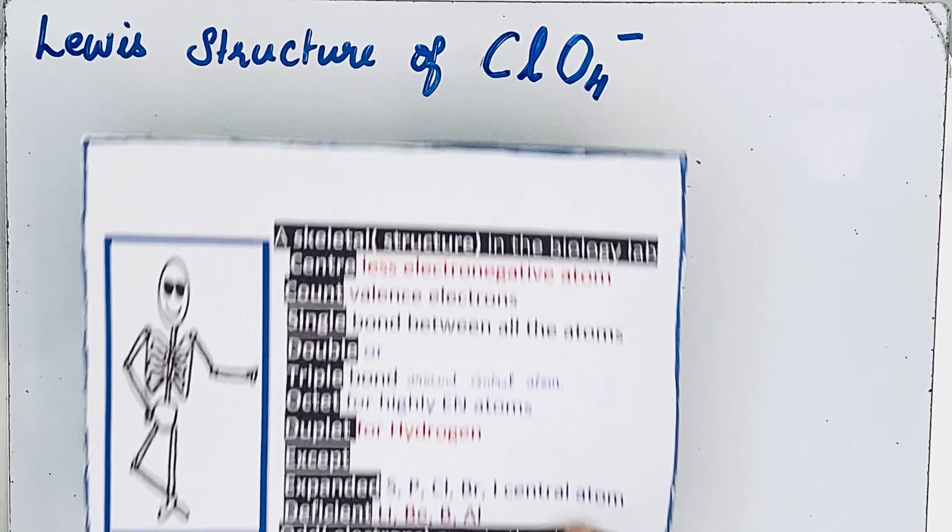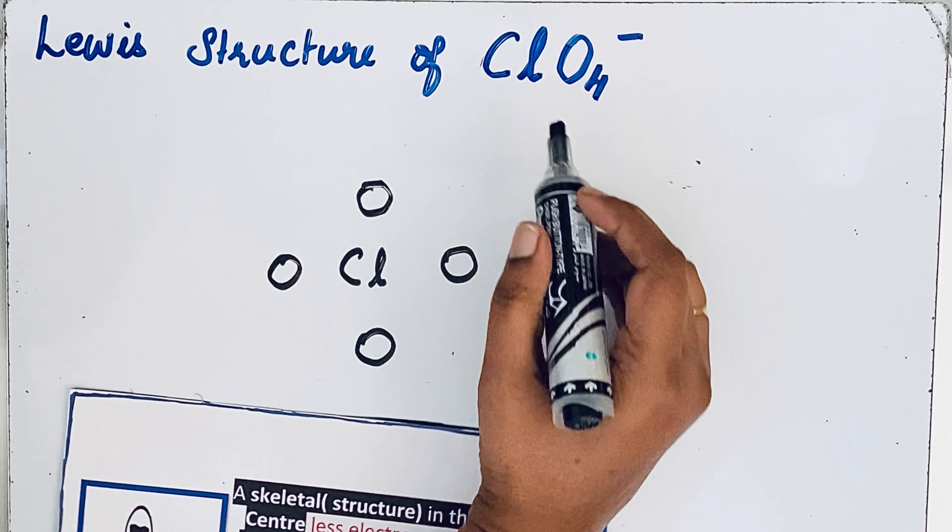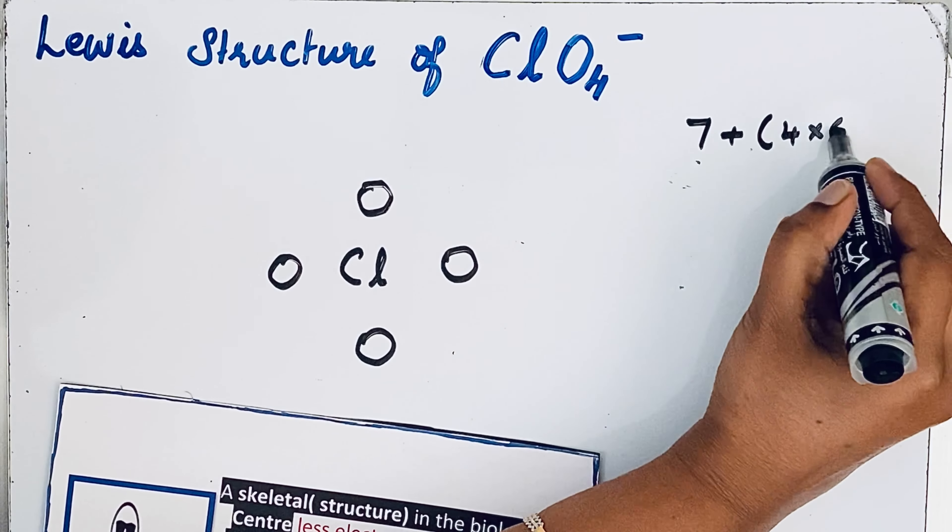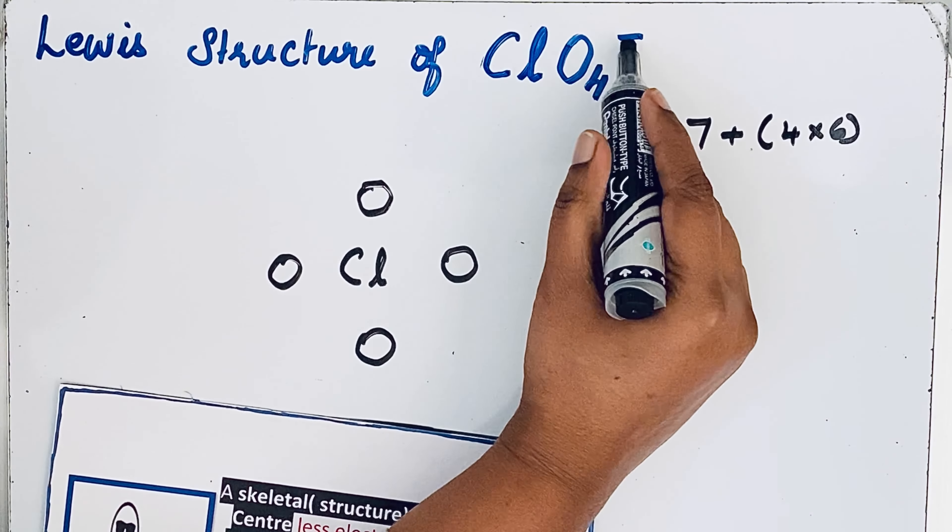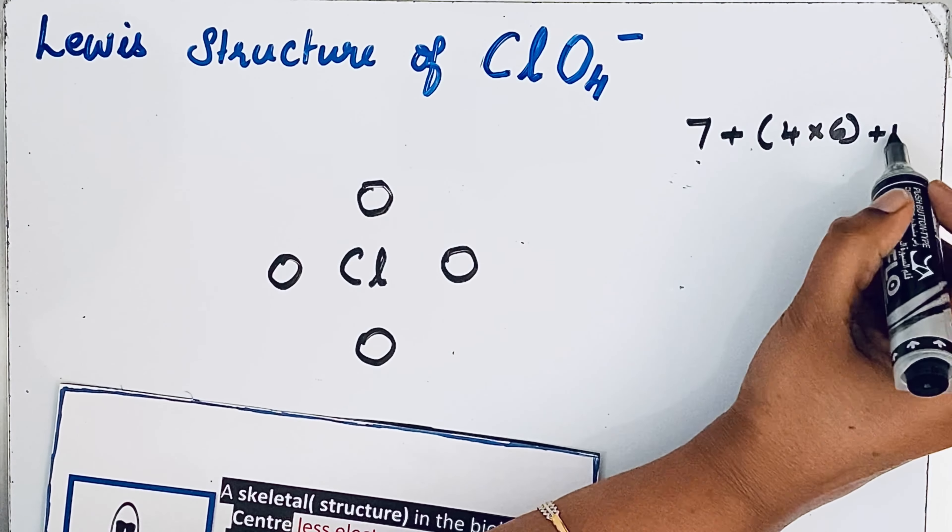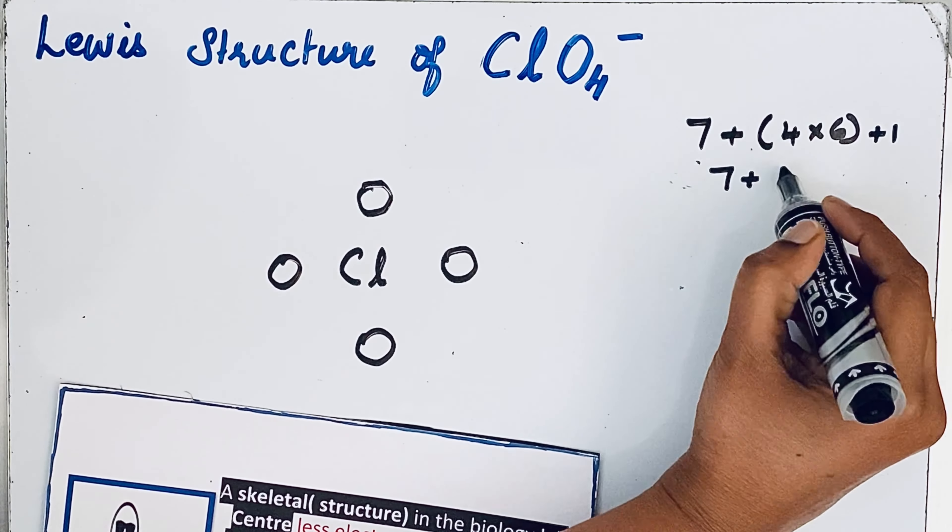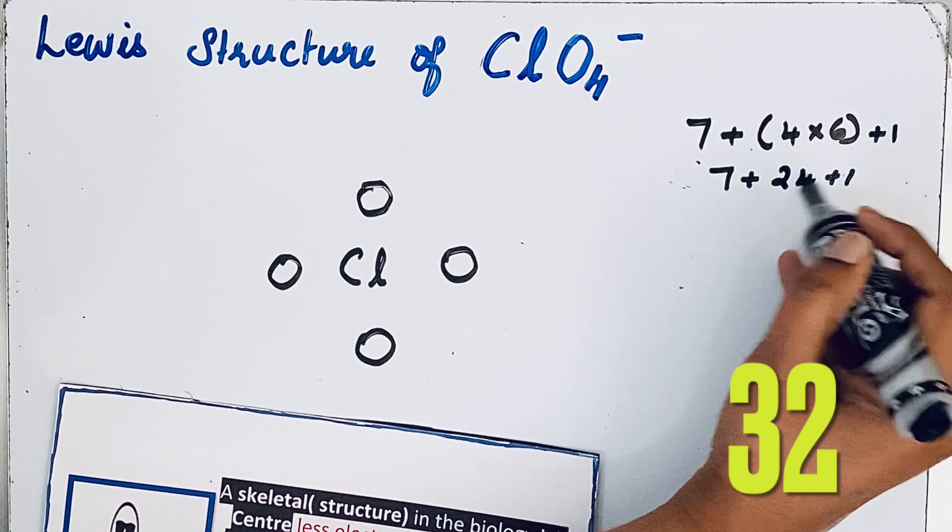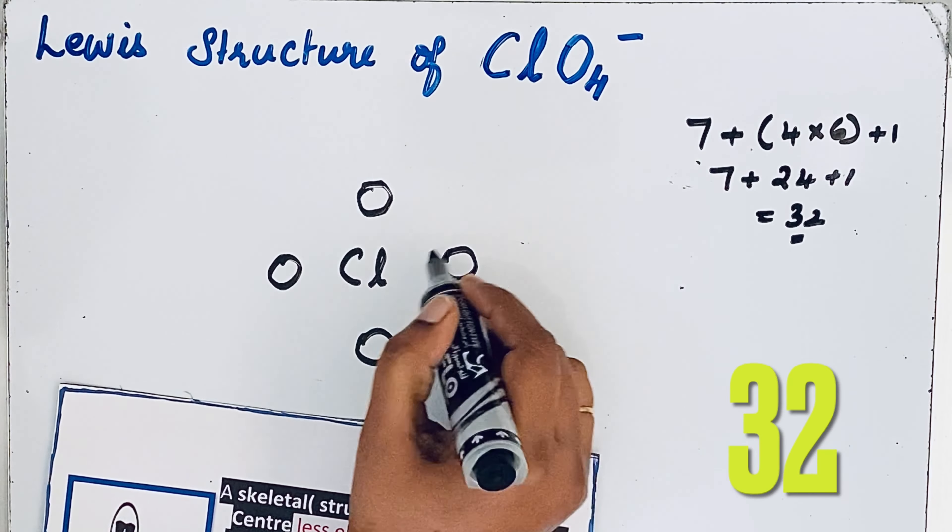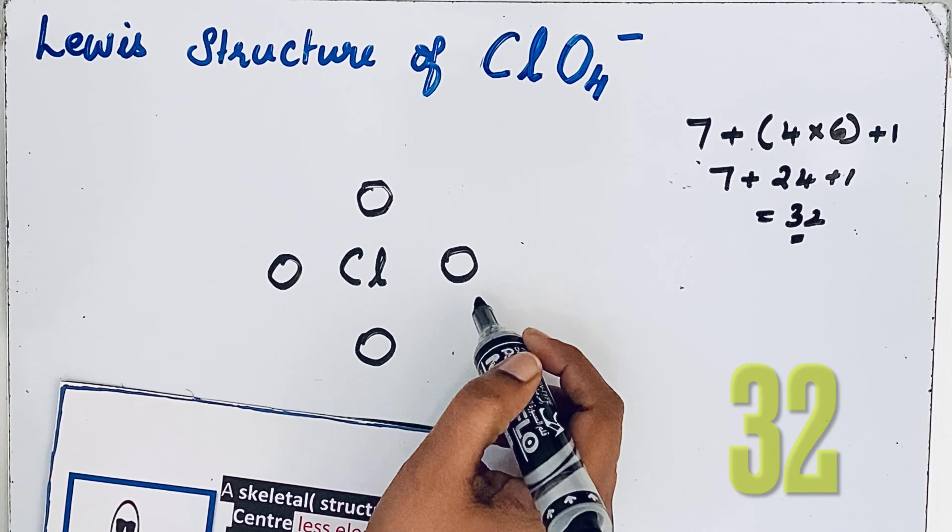Third step, count valence electrons. Here in Cl, valence electron seven, plus there are four oxygen atoms, so four times six. It's an anion, so we add that minus one. So seven plus 24 plus one equals 32. So we should have 32 valence electrons involved in the bond formation.